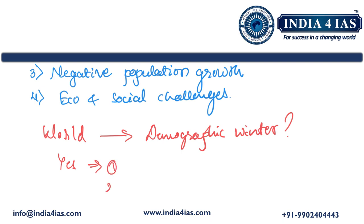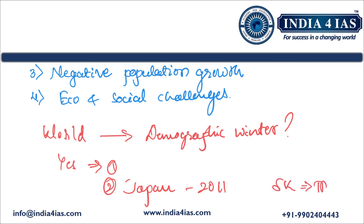In East Asia, countries like Japan, South Korea, and China face severe demographic challenges. Japan has one of the world's highest proportions of elderly people, and its population has been shrinking since 2011. South Korea's total fertility rate (TFR) is among the lowest in the world at 0.8 children per woman. Russia is also facing very low birth rates and high death rates, causing its population to decline.